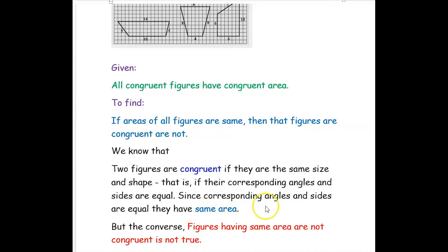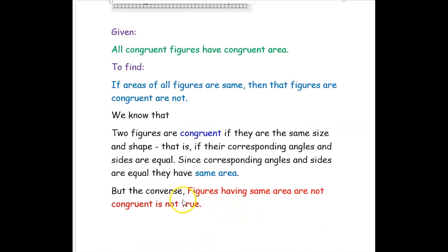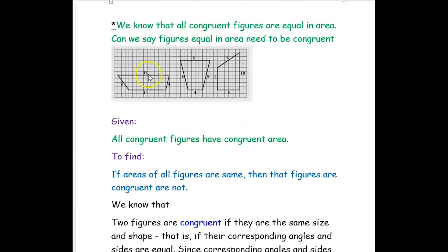Since corresponding angles and sides are equal, congruent figures have the same area. That is why congruent figures have the same area, but the converse — figures having the same area are congruent — is not true. Here each figure has a different size and shape, so even though the areas are the same, they are not congruent.